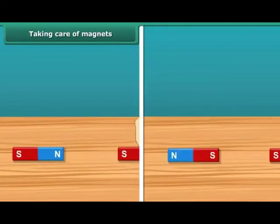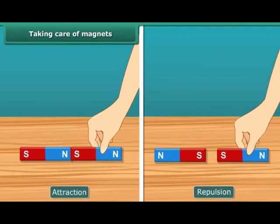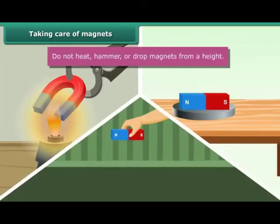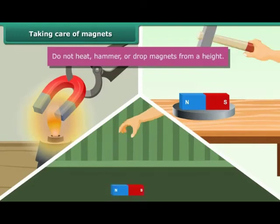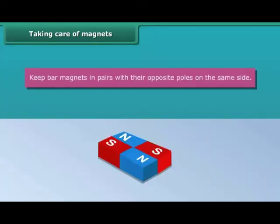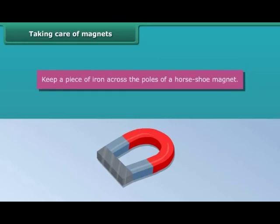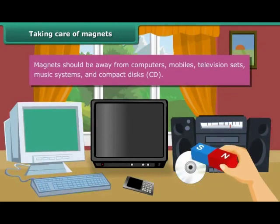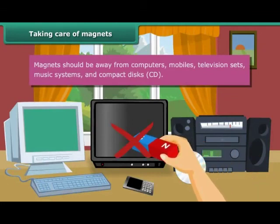Taking care of magnets. We are now aware of the attraction and repulsion properties of a magnet. To keep magnets safe and in working condition, follow these guidelines: Do not heat, hammer, or drop magnets from a height — they will lose their property if done so. Keep bar magnets in pairs with their opposite poles on the same side and use wood to separate them. Keep a piece of iron across the poles of a horseshoe magnet. Magnets should be kept away from computers, mobiles, television sets, music systems, and compact discs.